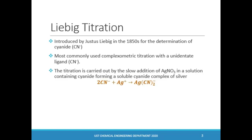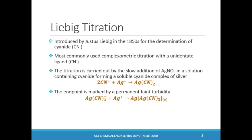The Liebig titration technique uses silver as a complexing agent with cyanide, forming the silver-cyanide complex. The endpoint is marked by the appearance of a permanent turbidity caused by the formation of a precipitate when excess silver reacts with the silver-cyanide complex.